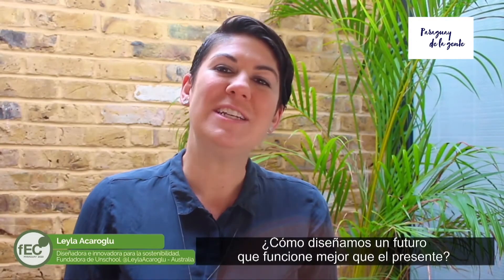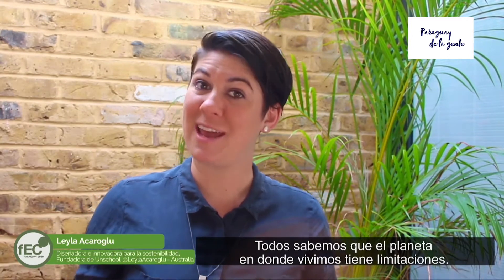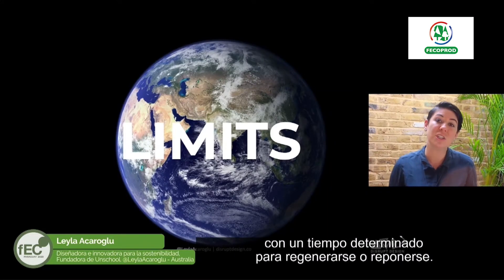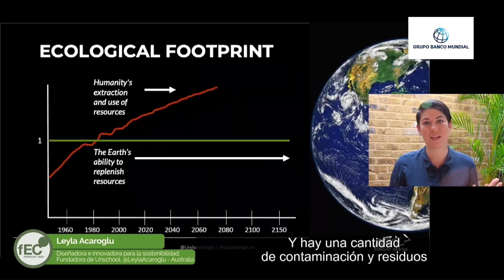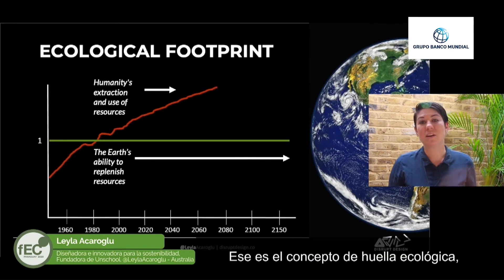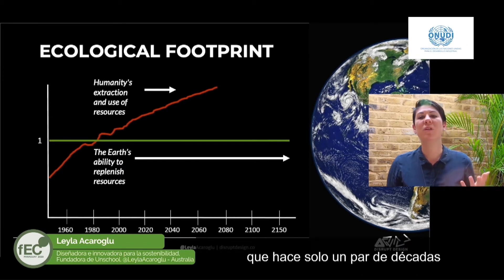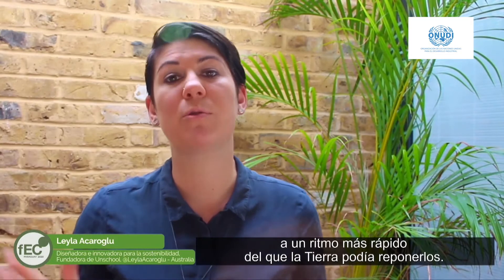So how do we design a future that works better than today? Well we all know that the planet that we live on and share has limitations. There are only so many resources, there are different durations of time it takes for those resources to regenerate or replenish, and of course there's only so much pollution and waste that the atmosphere and the planet can absorb. This is really the concept of the ecological footprint, which reminds us that it was only a few decades ago that we started to extract and process resources at a much faster rate than the earth could replenish.